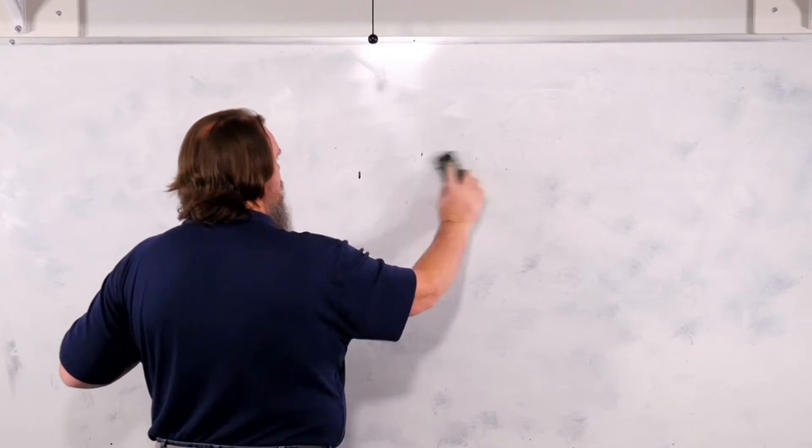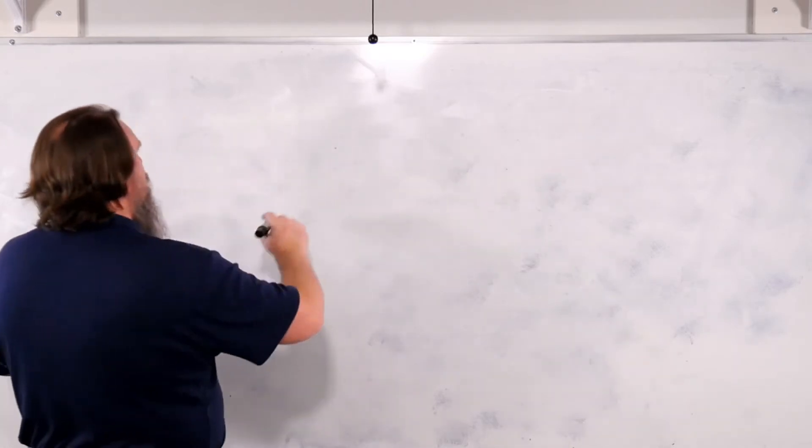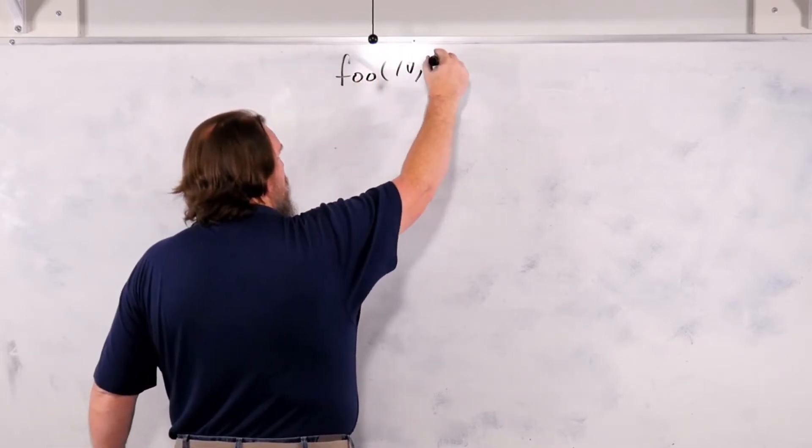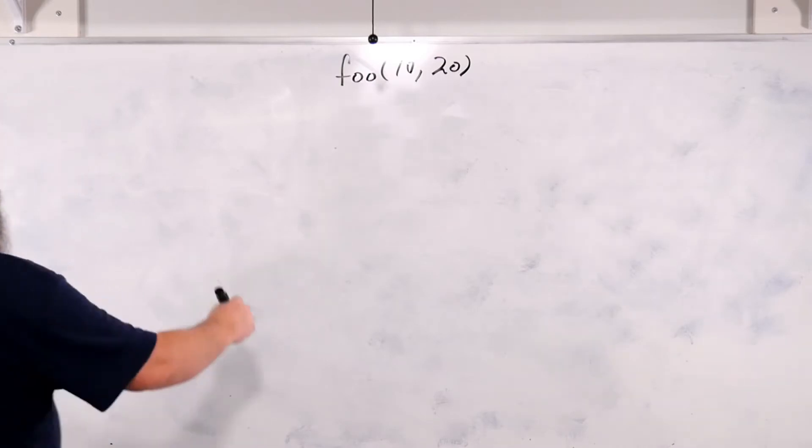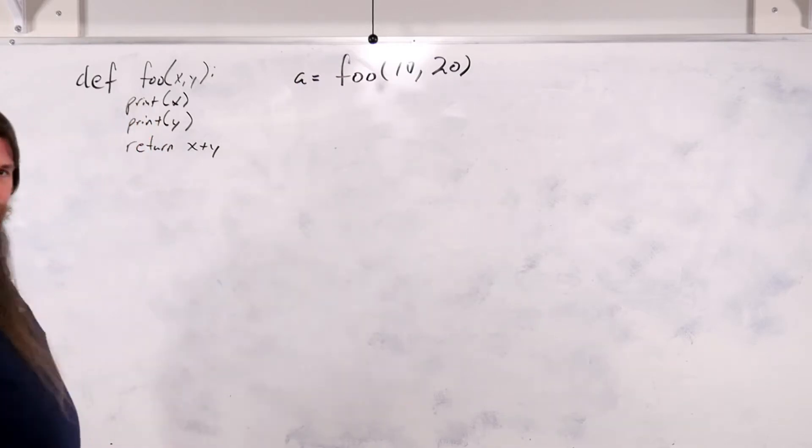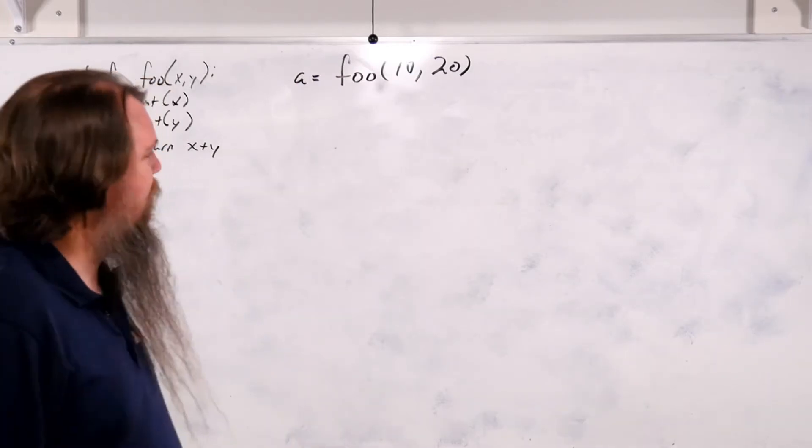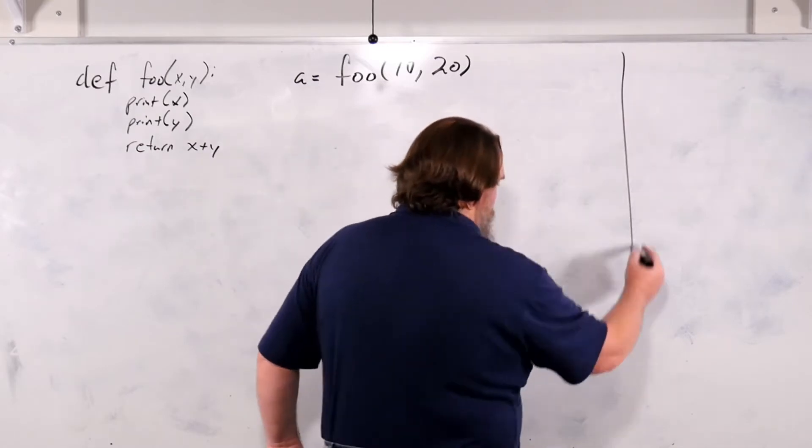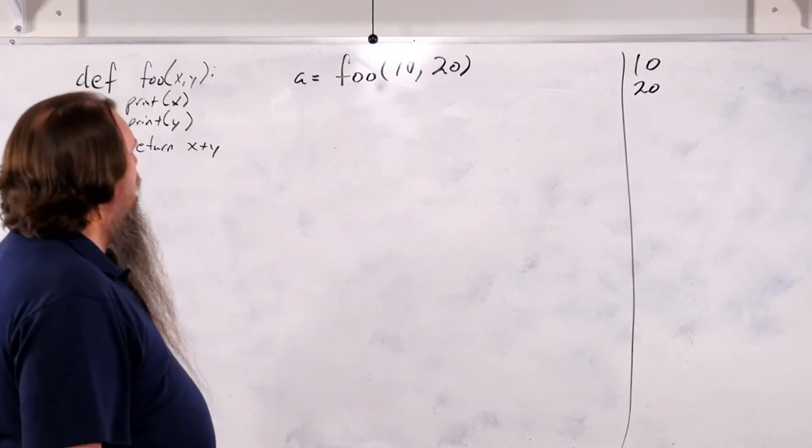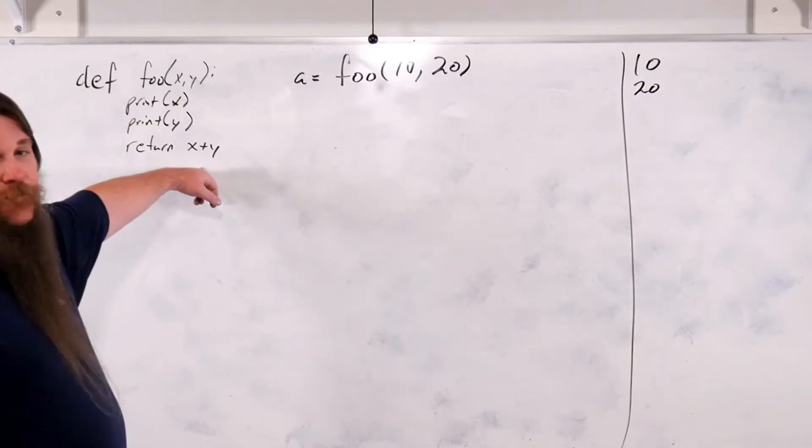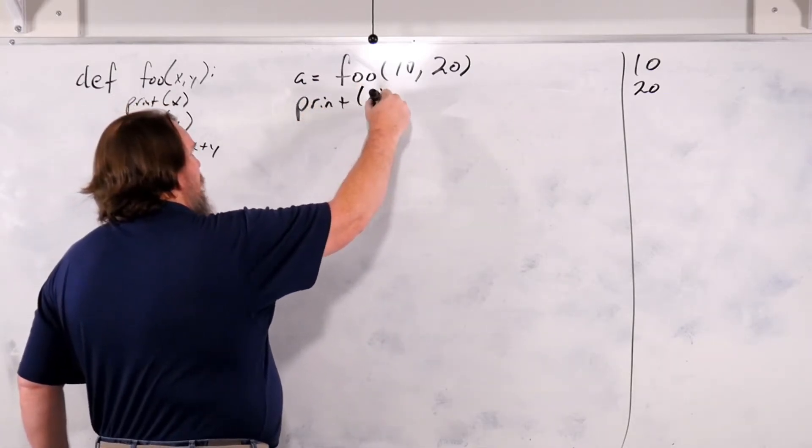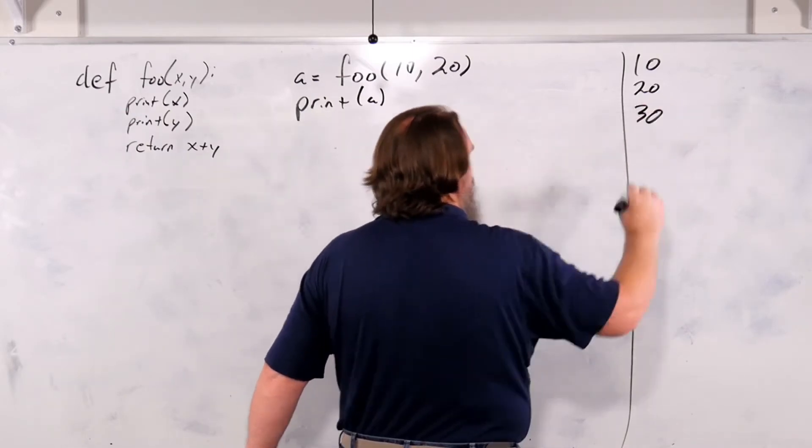So we've got our function foo. So what could we do? Well, we could call foo of 10, 20. Let's actually put foo over here. Alright, so over here we will say a equals foo of 10, 20. Well what's going to happen? Well, it's first going to print 10, then it's going to print 20, and then it's going to return 10 plus 20, set that equal to a. So let's print a, so it prints 30.